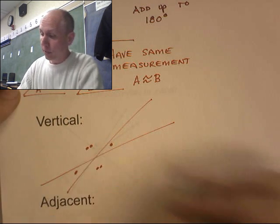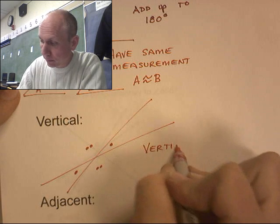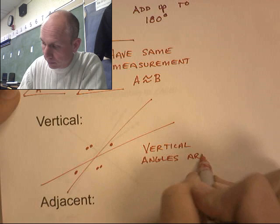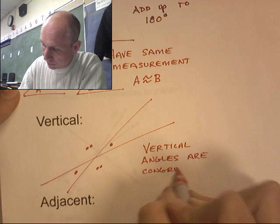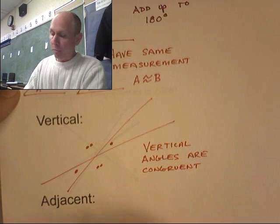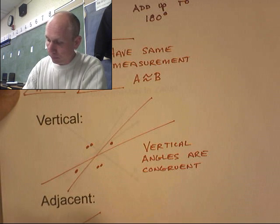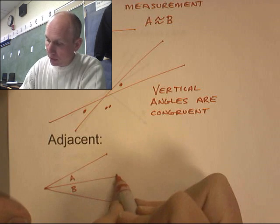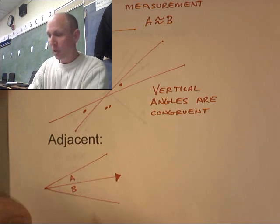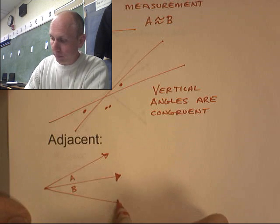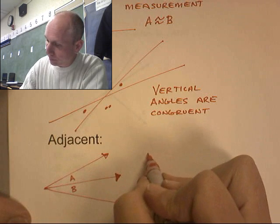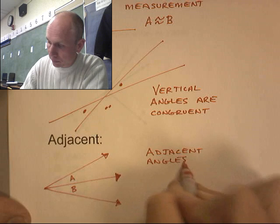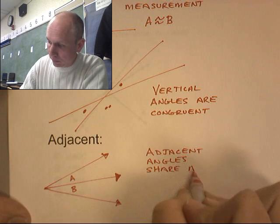Those are vertical angles, and these are vertical angles. Vertical angles are congruent. Adjacent angles share a side. Do you see how these guys share a side?